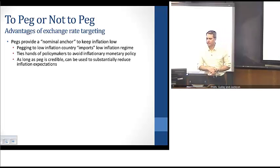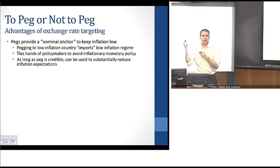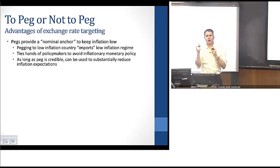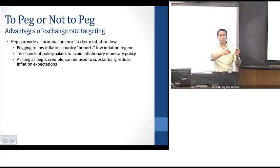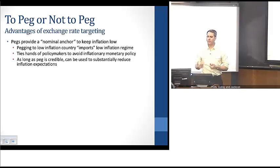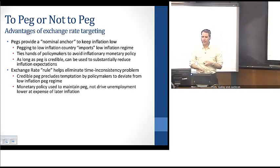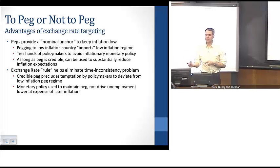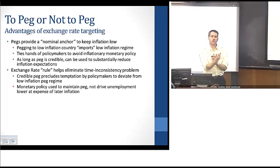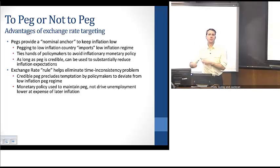The advantages of exchange rate targeting are several. First, a peg provides a nominal anchor, which helps keep inflation low. If a country pegs to an anchor country with low inflation, it can import that low-inflation monetary policy regime. In that sense, it ties the hands of policymakers and helps them avoid inflationary monetary policy, as long as the peg is credibly maintained. In addition, a peg acts as an exchange rate rule, which helps eliminate the time inconsistency problem. A credibly committed government or central bank is precluded from the temptation to deviate from a low-inflation regime, since monetary policy focuses on maintaining the peg rather than driving down unemployment in ways that could have inflationary implications.